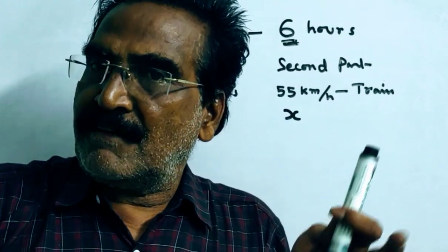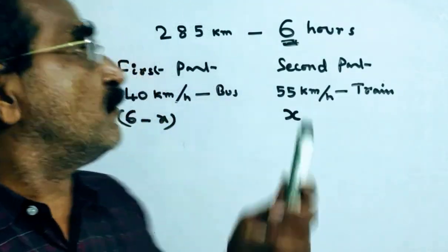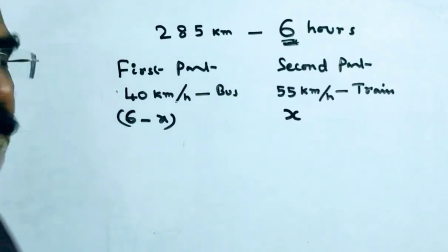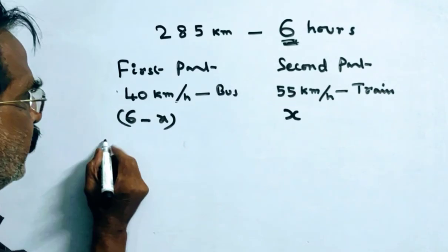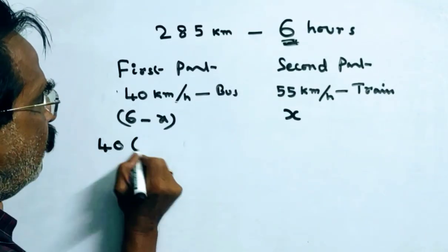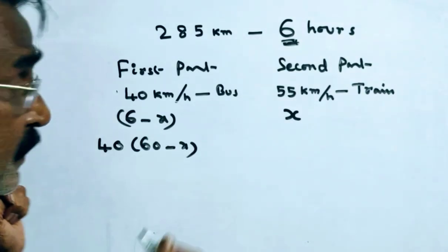Now the distance traveled by bus plus the distance traveled by train is equal to total distance 285 km. Distance traveled by bus is velocity into time, 40 into 6 minus x. This is the distance traveled by bus.